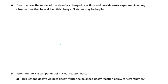The next question asks how the model of the atom has changed over time with three experiments or key observations. Starting with the ancient Greeks, Democritus discussed the idea of things being indivisible — 'atomos.' Then, in the early 1800s, Dalton's atomic theory was important. Dalton talked about atoms being indivisible; he didn't yet know about subatomic particles.